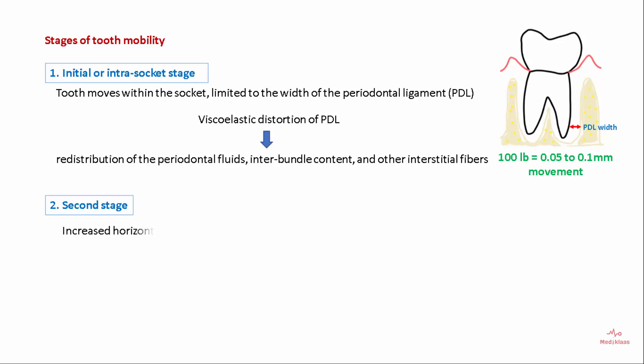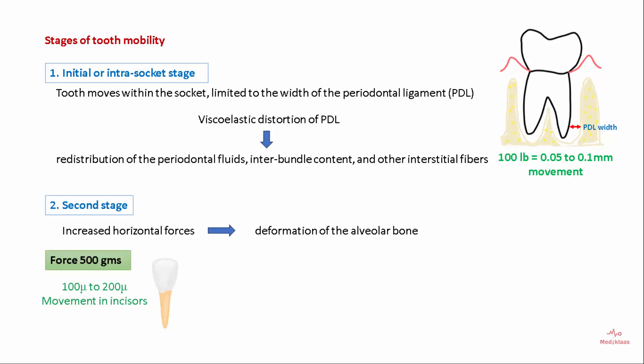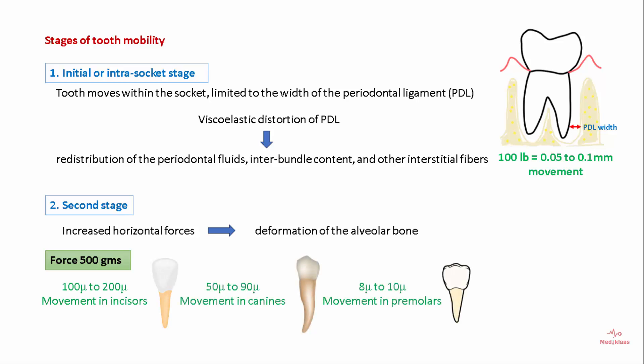In the second stage, when there is an increase in horizontal forces, there is deformation of the alveolar bone. When a force of 500 grams is applied, incisors move about 100 to 200 microns, canines move about 50 to 90 microns, premolars move about 8 to 10 microns, and molars move about 40 to 80 microns.